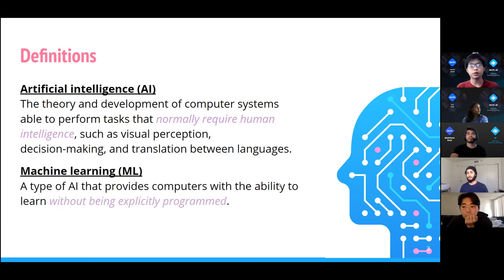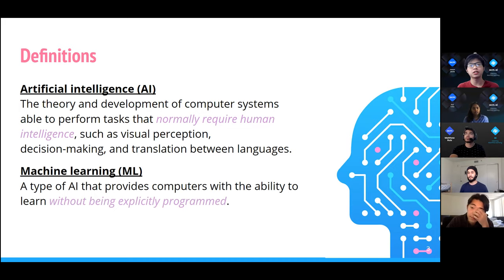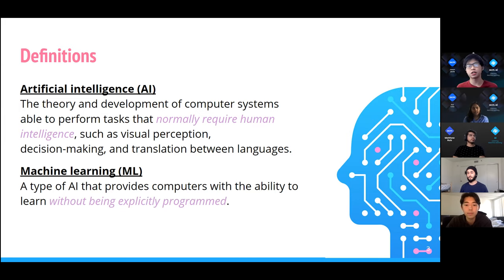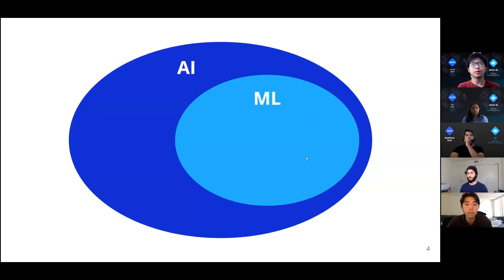The second definition is machine learning, or ML. Even though machine learning and artificial intelligence often get used interchangeably in mainstream media, they're actually two different things — machine learning is a subset or type of artificial intelligence. It provides computers with the ability to learn without being explicitly programmed, meaning we're still writing code but not programming every possible instruction; we want the computer to learn some things more or less on its own.